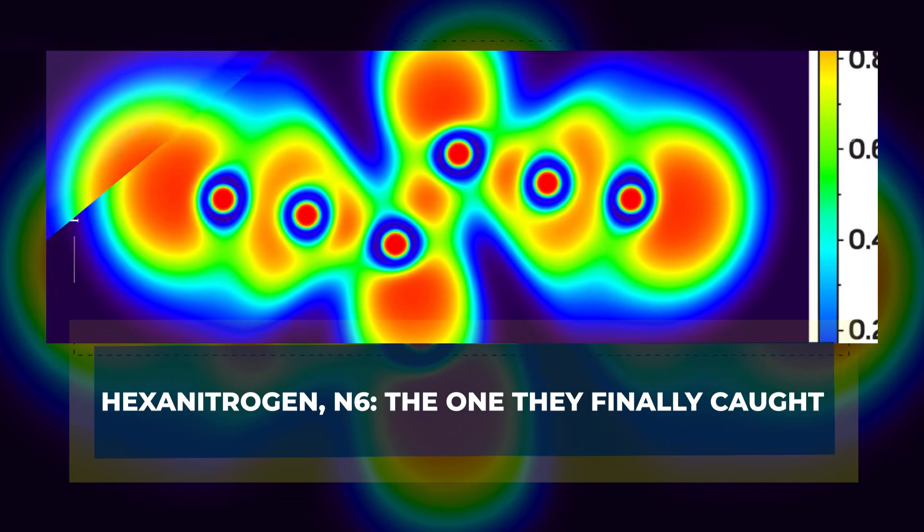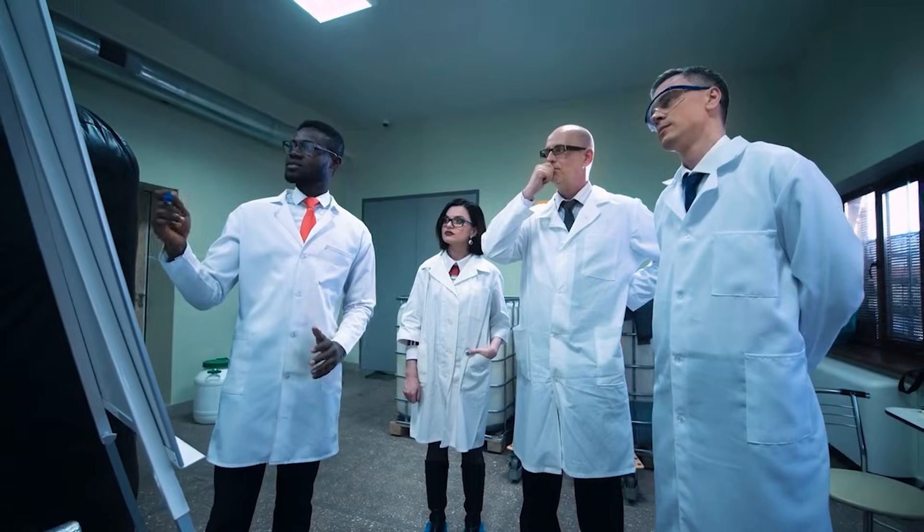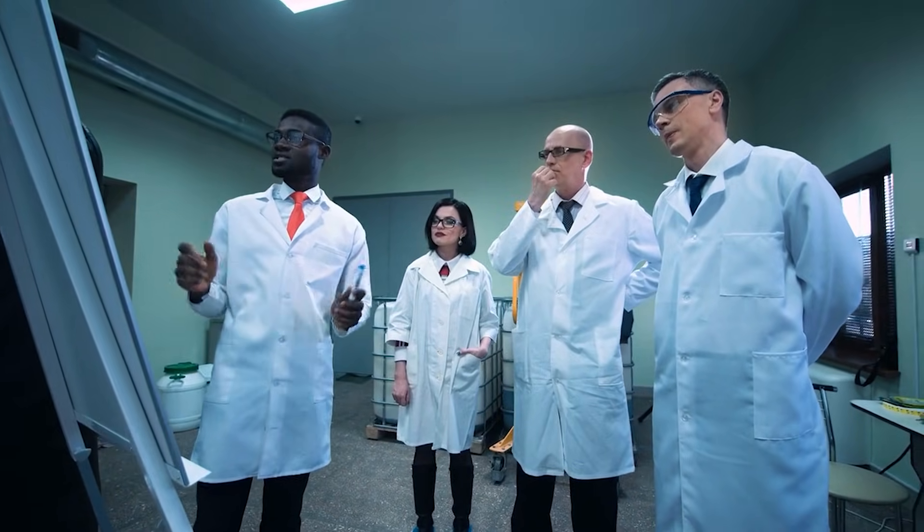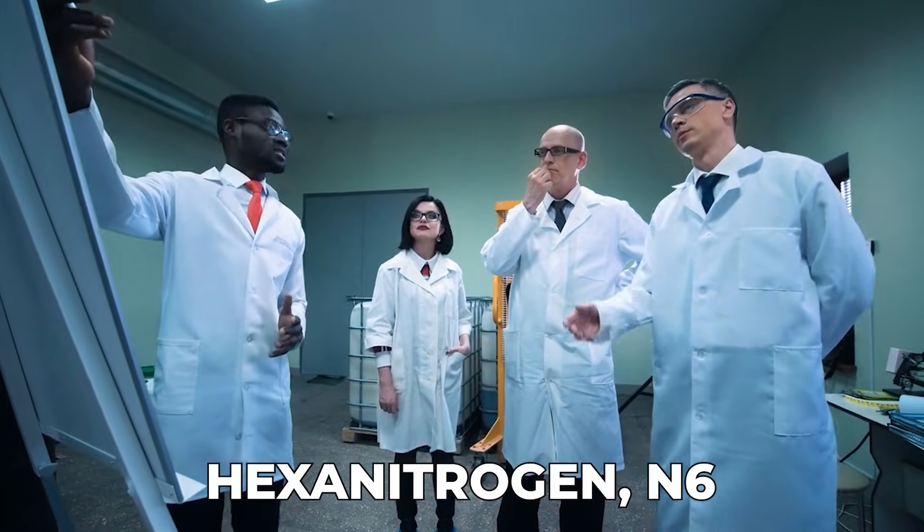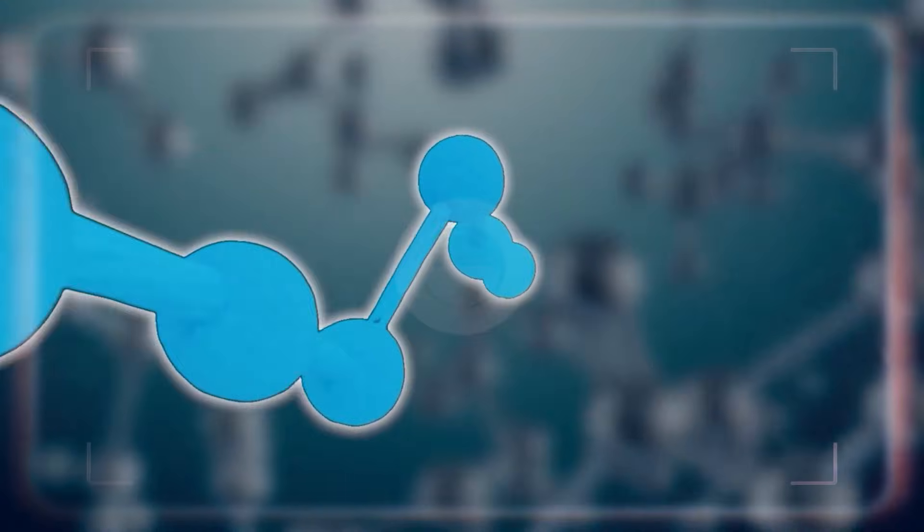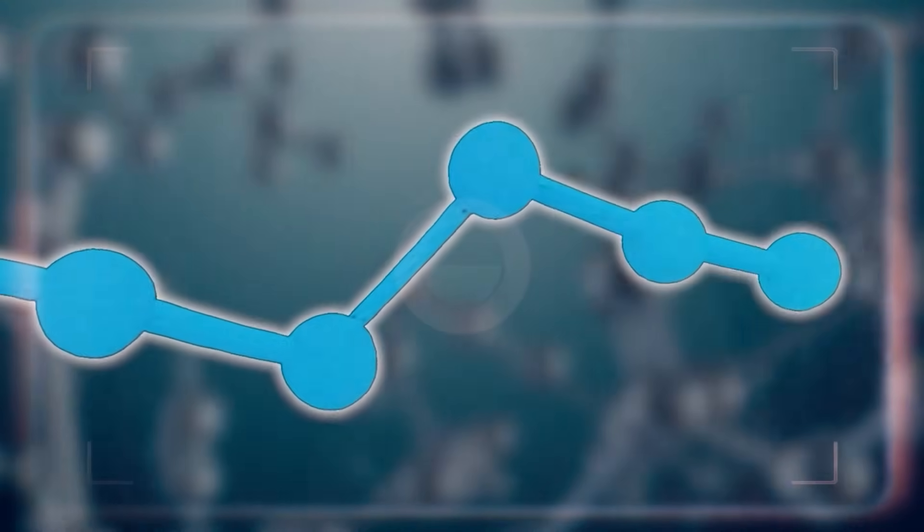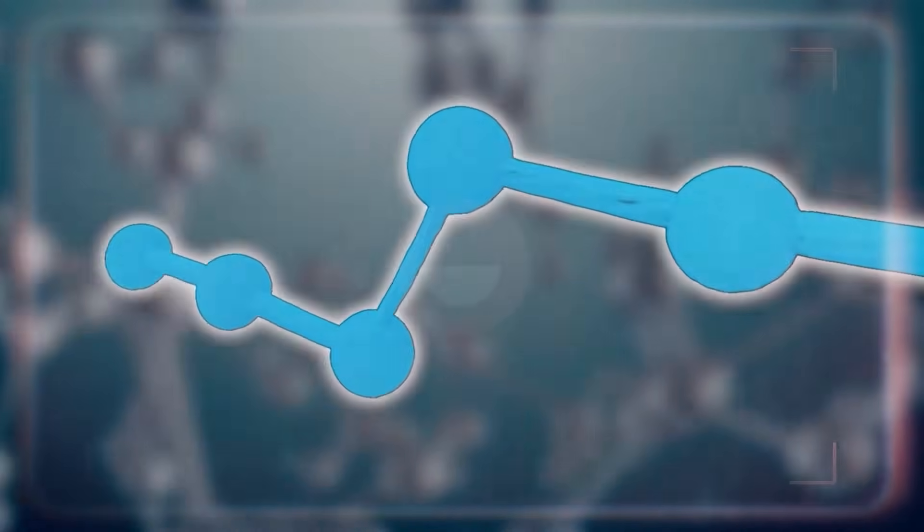Hexanitrogen N6 – the one they finally caught. The Giessen team changed that story by isolating hexanitrogen, N6. This matters for one simple reason. It is neutral, pure nitrogen, and larger than N2.